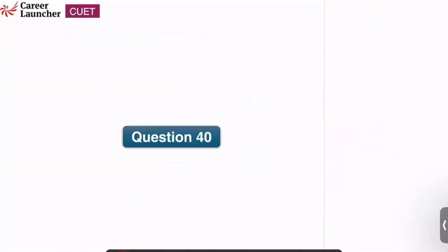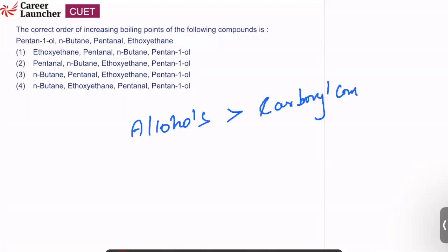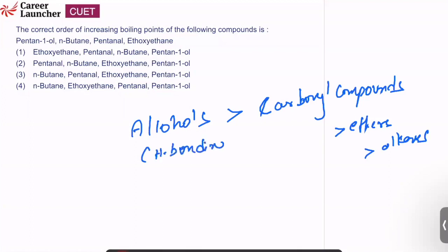Question number 40: correct order of increasing boiling points. Alcohols have the highest boiling points due to hydrogen bonding, then carbonyl compounds, then ethers, then alkanes. So increasing order: n-butane < ethoxyethane < phenol < alcohol (ethanol). Answer is option 4. Very basic question from alcohols/phenols chapter.